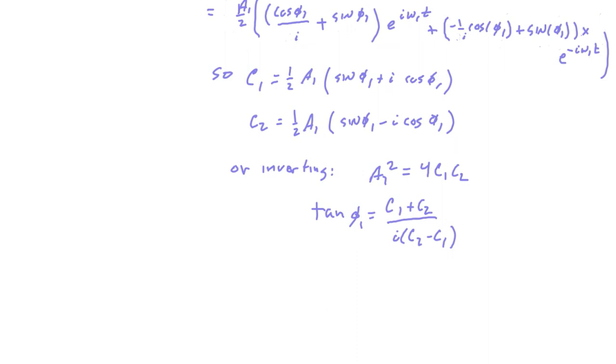Or I can invert the whole process and figure out what these are. So to get A1, I multiply the two things, these two equations. The stuff in the parentheses, that product is just equal to one. And so I get A1 squared is four times C1 C2.